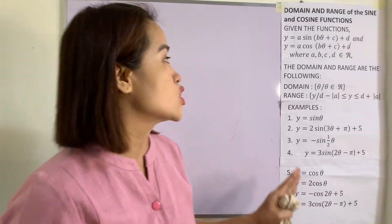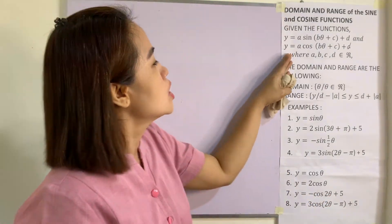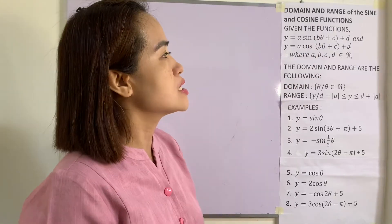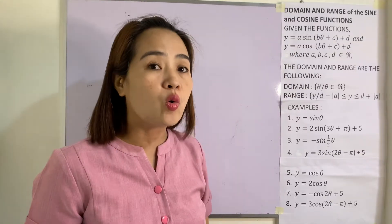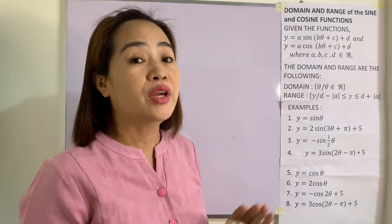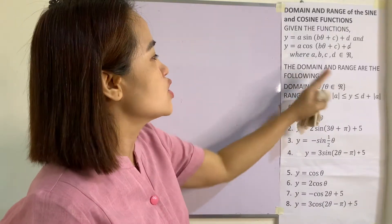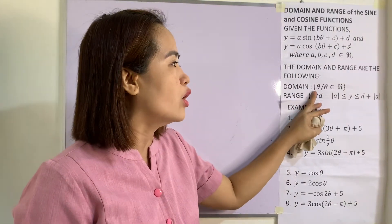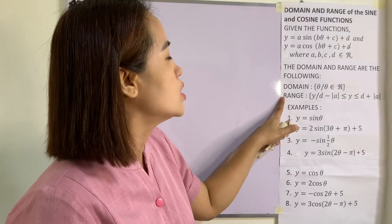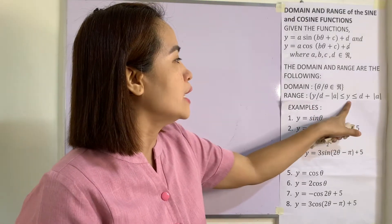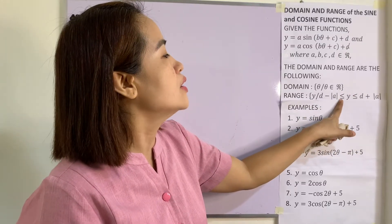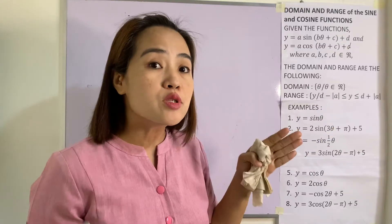How do we find the domain and range of the sine and cosine function? Given the function y = a·sin(bθ + c) + d, where a, b, c, d are real numbers, the domain is the set of all θ such that θ is an element of the set of real numbers. The range is the set of all y such that y is less than or equal to d plus the absolute value of a, but greater than or equal to d minus the absolute value of a.